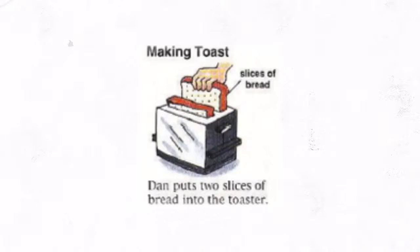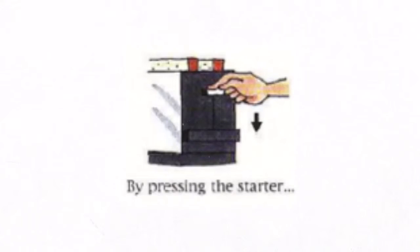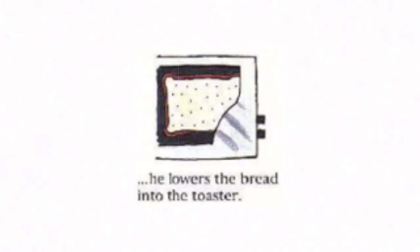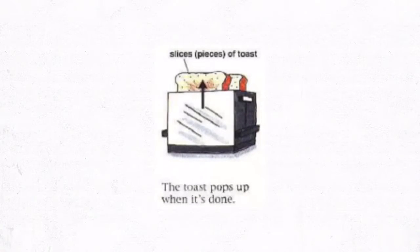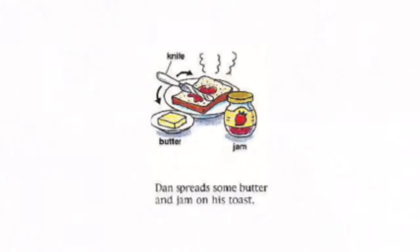Making toast is even easier. Here's how Dan does it. Dan puts two slices of bread into the toaster. By pressing the starter, he lowers the bread into the toaster. Hot wires inside the toaster toast the bread. The toast pops up when it is done. And finally, Dan spreads some butter and jam on his toast.